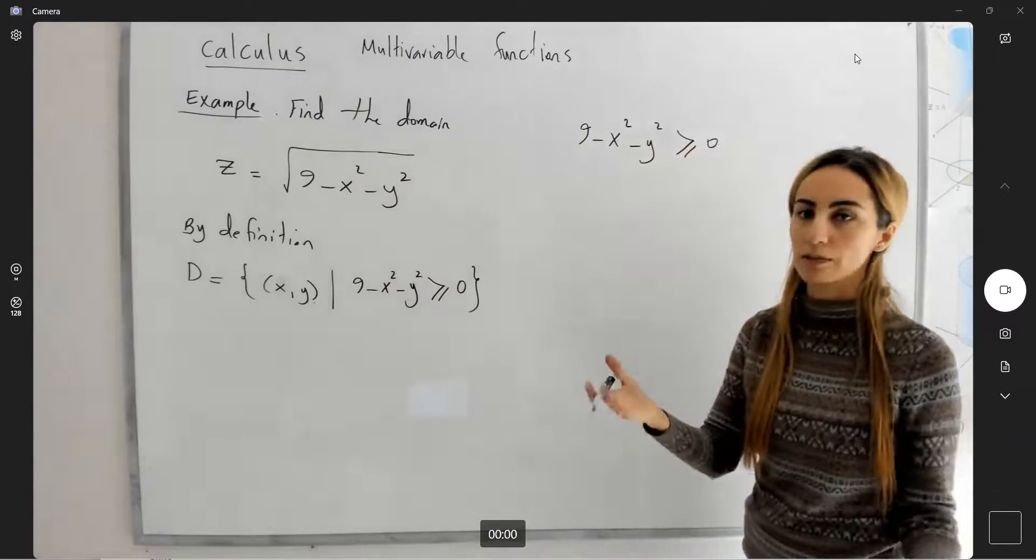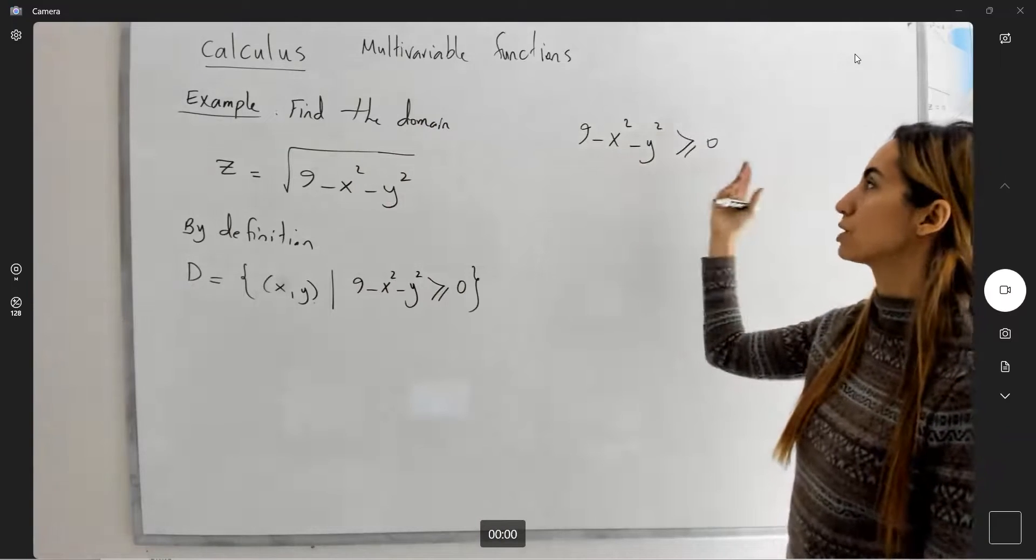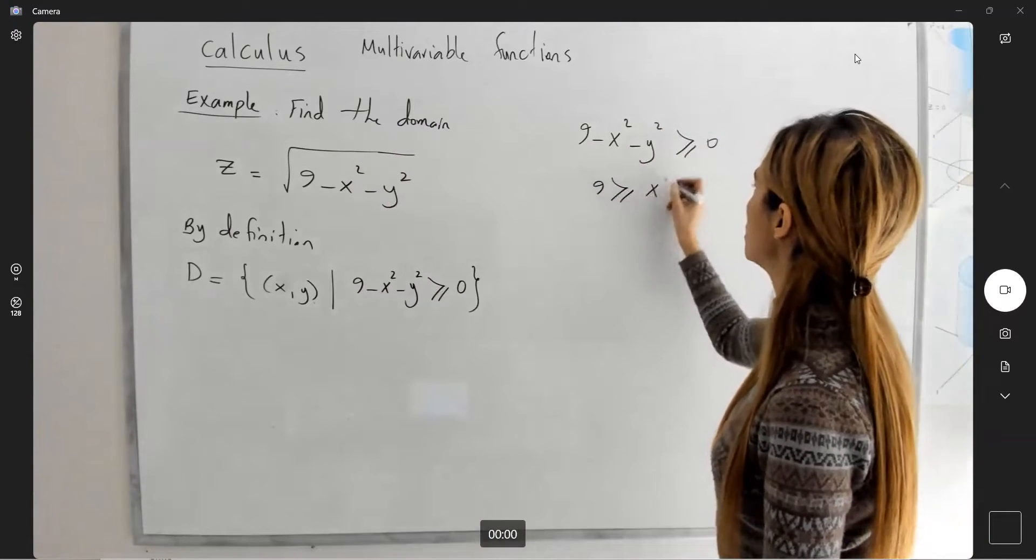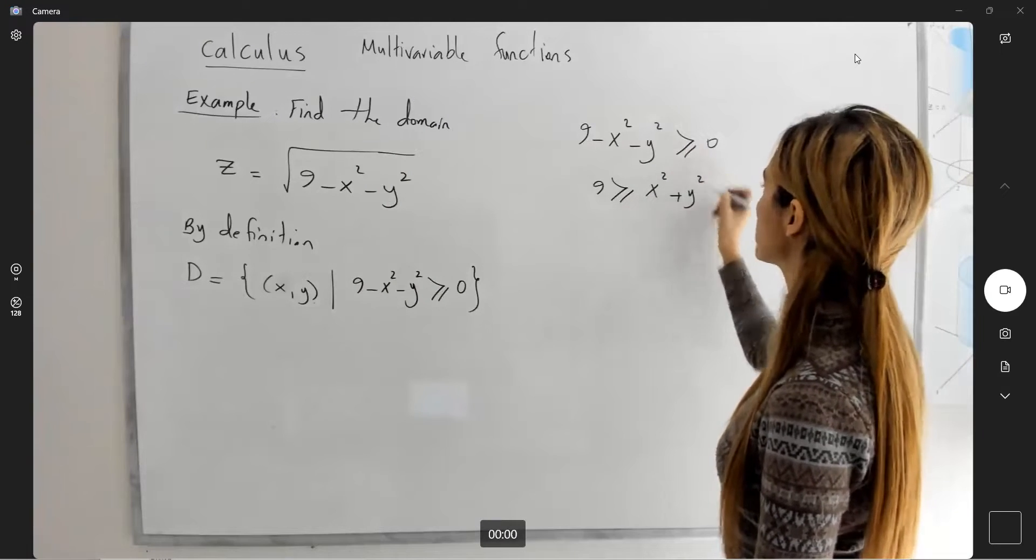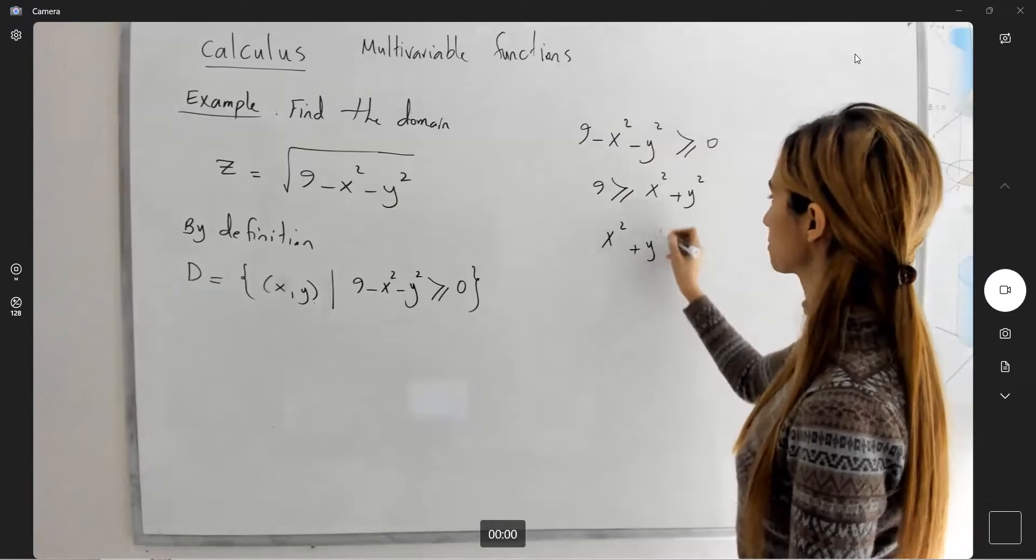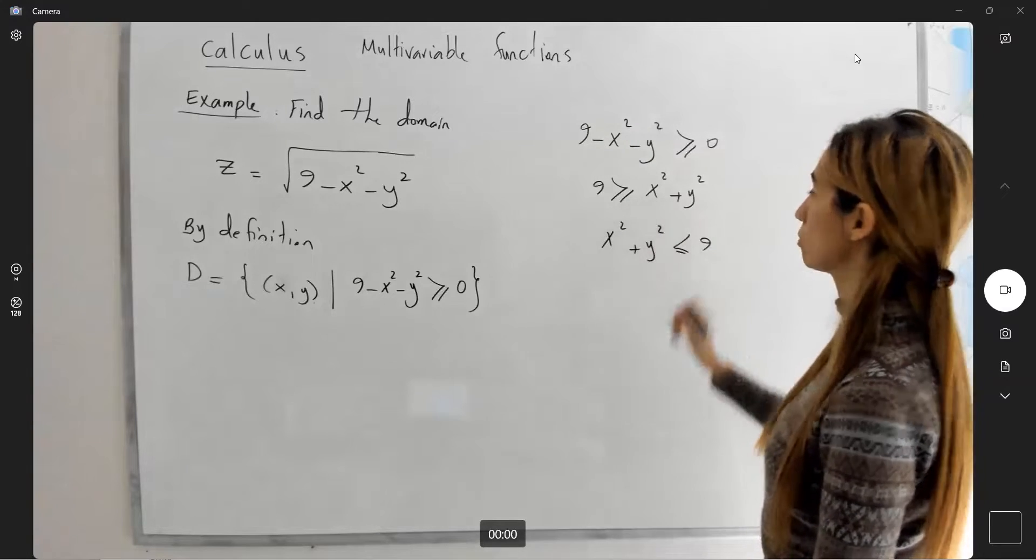What's the meaning of that? It means that we can bring these two terms to the other side. We have 9 larger than or equal to x squared plus y squared, or x squared plus y squared is less than or equal to 9.